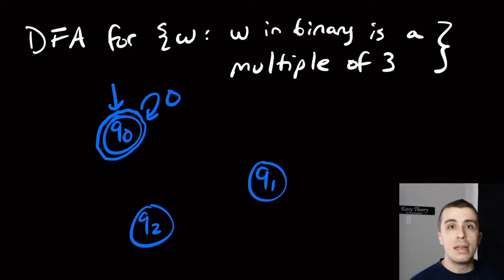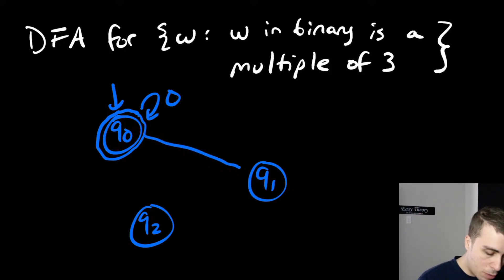If we see a 1, then that means effectively we multiplied the number by 2 and added a 1. So that means that the remainder is going to be multiplied by 2 and add a 1 onto it. So if we were here, then that means the state we should go to on 1 is over here.